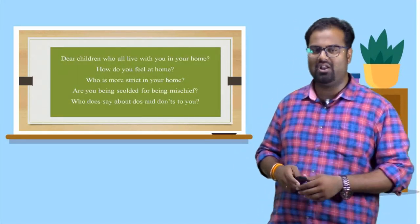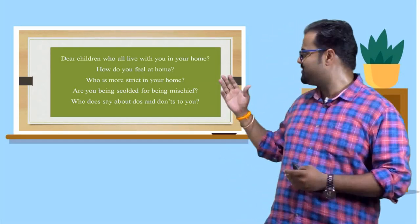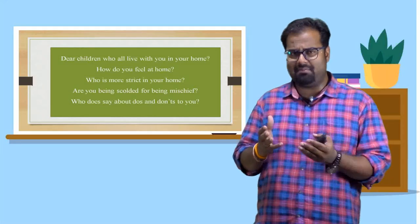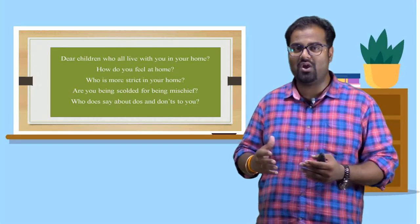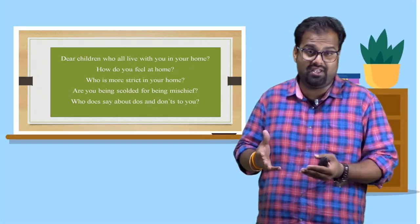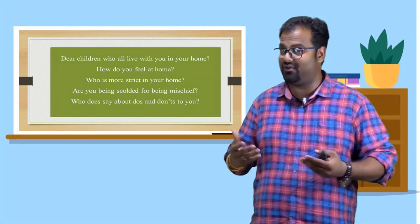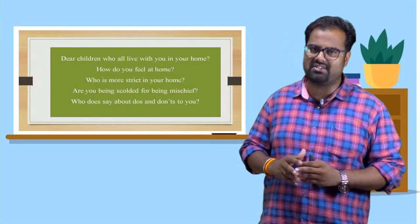That means the boy must have spoken something which never should have spoken. Let's get to the next one. Look at the screen. What's being written there? It's there. Dear children, who all lived your home? Who are the members in your home? I have already spoken that home is a place where the entire family lives in. Parents, grandparents, brothers, sisters and of course ourselves. That is why it is the most beautiful place on the earth.